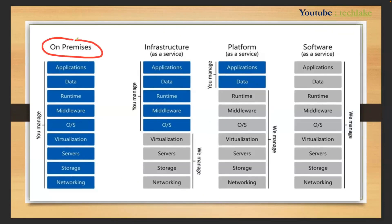On-premises means every company, at their premises, will have their own network, storage, servers, virtual machines, operating systems, middleware, runtime, data, and applications — everything owned and managed by that company in their premises. That is what we call on-premises. Every company manages those servers, operating systems, storage, network, and power. This has been happening for the last 20 to 30 years. Every organization has infrastructure in their premises.